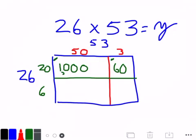Down on the bottom, in this box, I'm going to do 6 times 50. Well, 6 times 5 is 30. Add the 1 0 from 50. And over here, I'm going to do 6 times 3. That's 18.